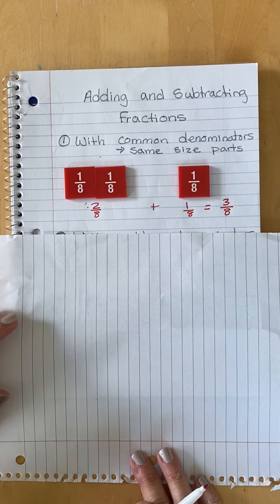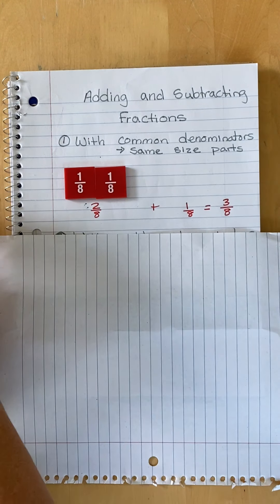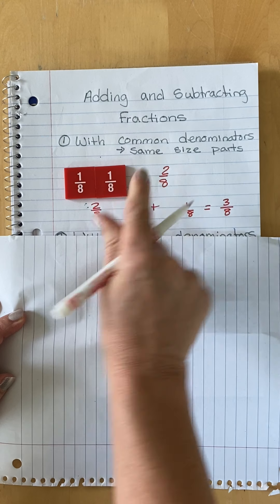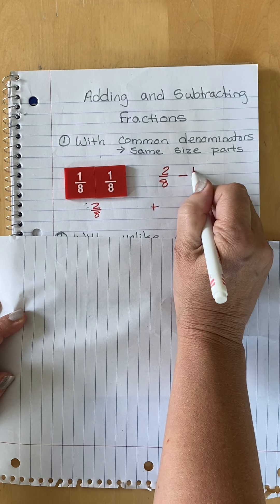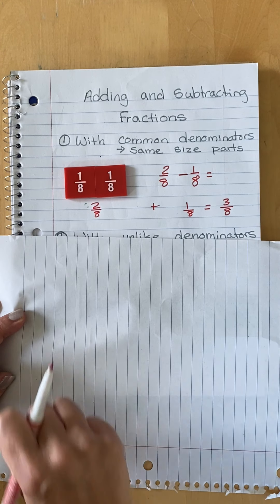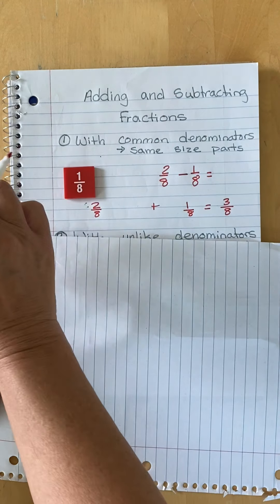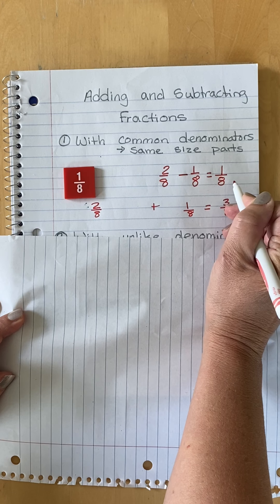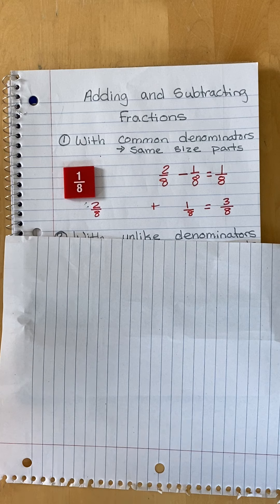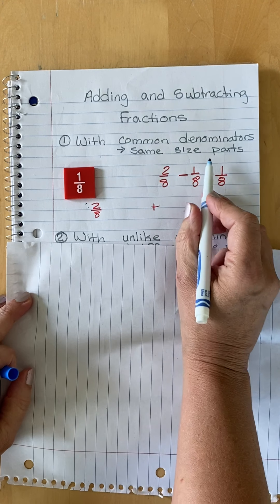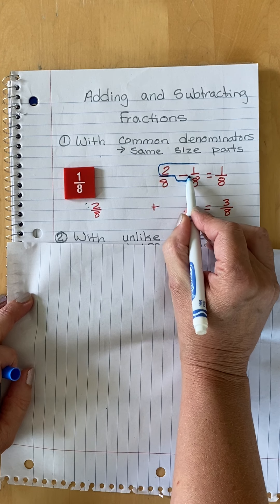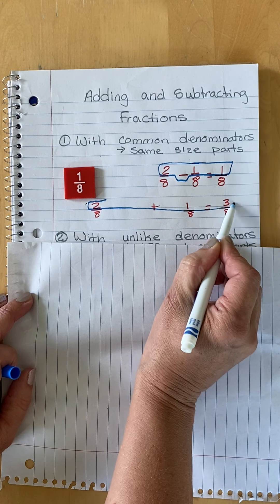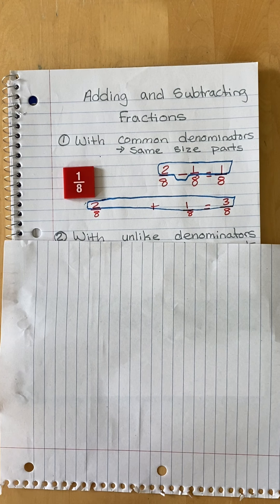If we were going to subtract and we started with two-eighths, and we wanted to take one-eighth away — they're the same size parts — we just take one away. Take one-eighth away and we're left with one-eighth. What we can see is that when our denominators match, we are simply doing our operation with our numerators, because our denominators are the same — meaning the pieces are the same size parts.